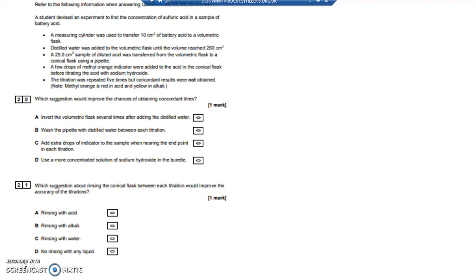The sample of the acid was then transferred from the volumetric flask to a conical flask using a pipette. A few drops of methyl orange indicator were added. Methyl orange indicator is red in acid, so when you put the methyl orange indicator into the battery acid in the conical flask, it's going to be red.